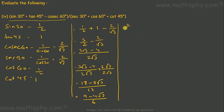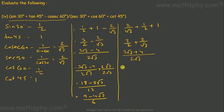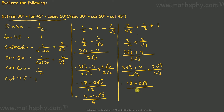For the denominator: sec 30 plus cos 60 plus cos 45 equals 2 over root 3 plus 1 over 2 plus 1 over root 2. This gives 3 over 2 plus 2 over root 3, which simplifies to 3 root 3 plus 4 over 2 root 3. Rationalizing gives 18 plus 8 root 3 over 12, and taking 2 as common: 9 plus 4 root 3 over 6.